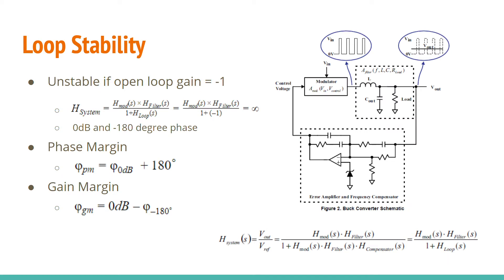Looking at the overall transfer function, the system would be unstable if H loop equals negative 1 because we will have a gain of infinity. If any frequency produces a 0 dB gain and negative 180 phase, the closed loop system becomes unstable. This is why gain and phase margins are important. Margins tell us how much wiggle room our system has before becoming unstable. We can calculate the phase margin by taking the angle at which the magnitude of H loop is at zero and adding 180 to that.